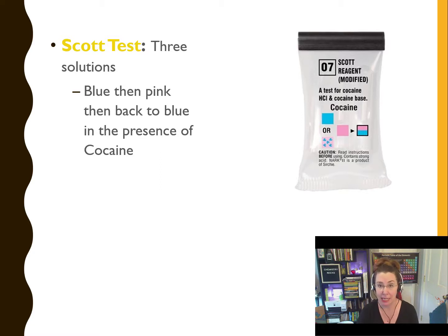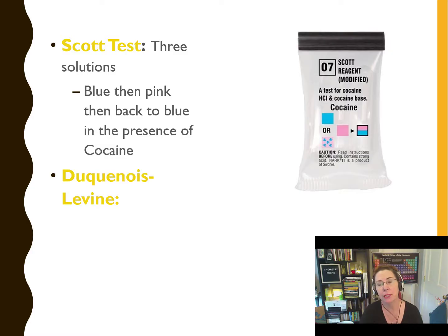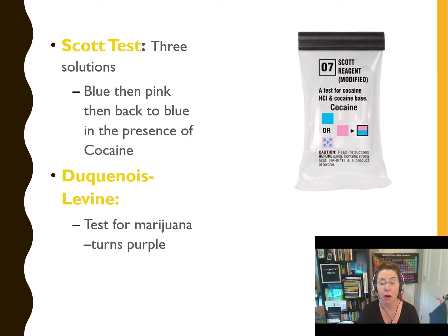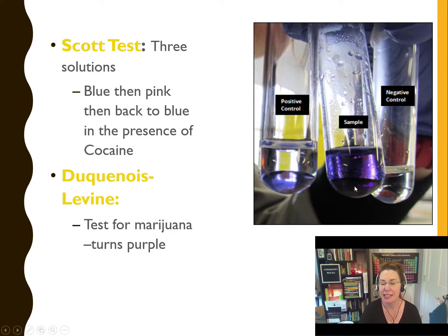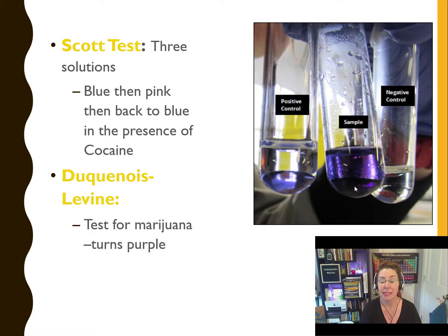The last color-based test is called the Duquanau-Levine test, which is mainly used to test for the presence of marijuana or other cannabinoid products — it will turn purple. In this photo, we have a positive control as a comparator, the sample in the middle, and a negative control. In this case, the sample tested positive for marijuana.